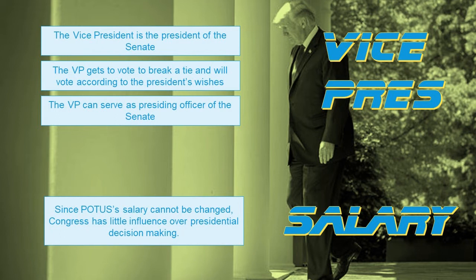The president's salary is also a check over Congress. The president's salary cannot be changed while they are in office — no raises or pay cuts. This means Congress has no way to influence the president's decision-making through pay. If Congress could adjust the president's salary, they could threaten pay cuts or promise raises to coerce approval of legislation. So the fixed salary is an important check that the president has over the legislative branch.